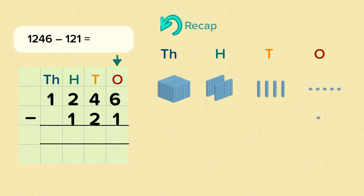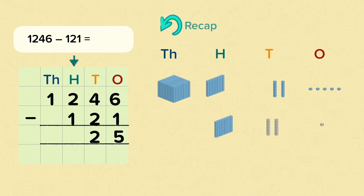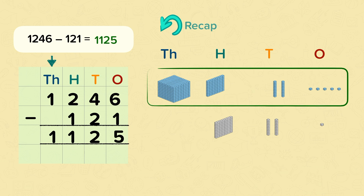The first thing we need to do is start at the ones. Six subtract one is five. Then we move to the tens: four tens subtract two tens is two. Then on to the hundreds: two subtract one is one. And then on to the thousands: we've got one thousand, we're not subtracting anything so it stays as one. So our answer is one thousand one hundred and twenty-five.